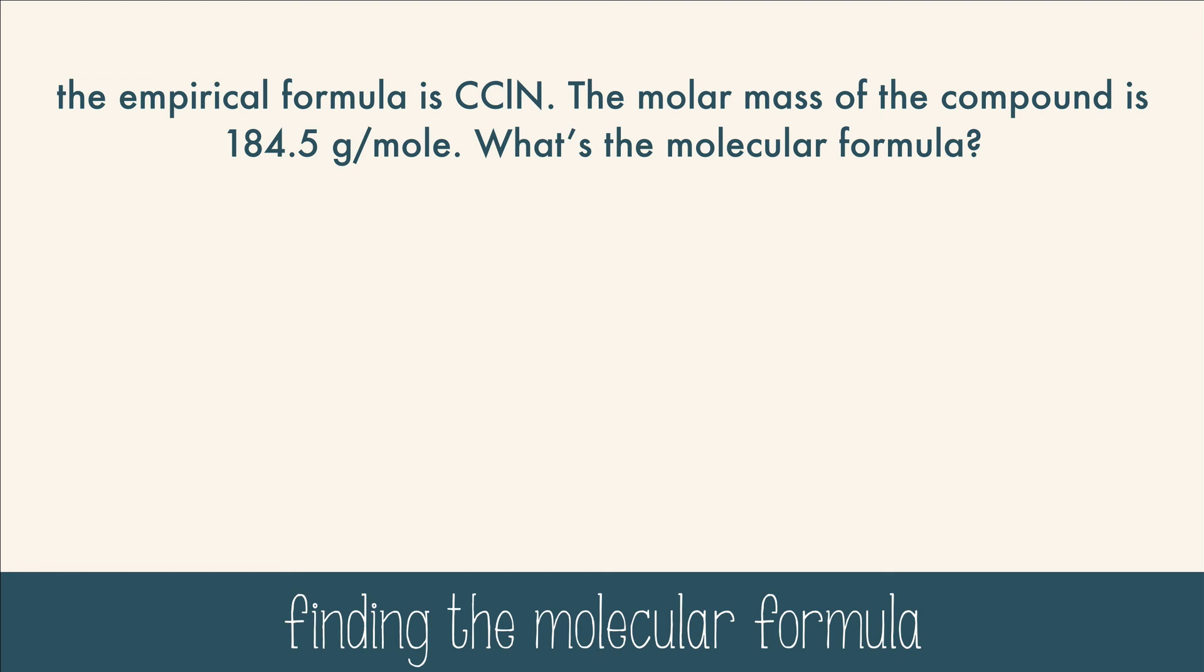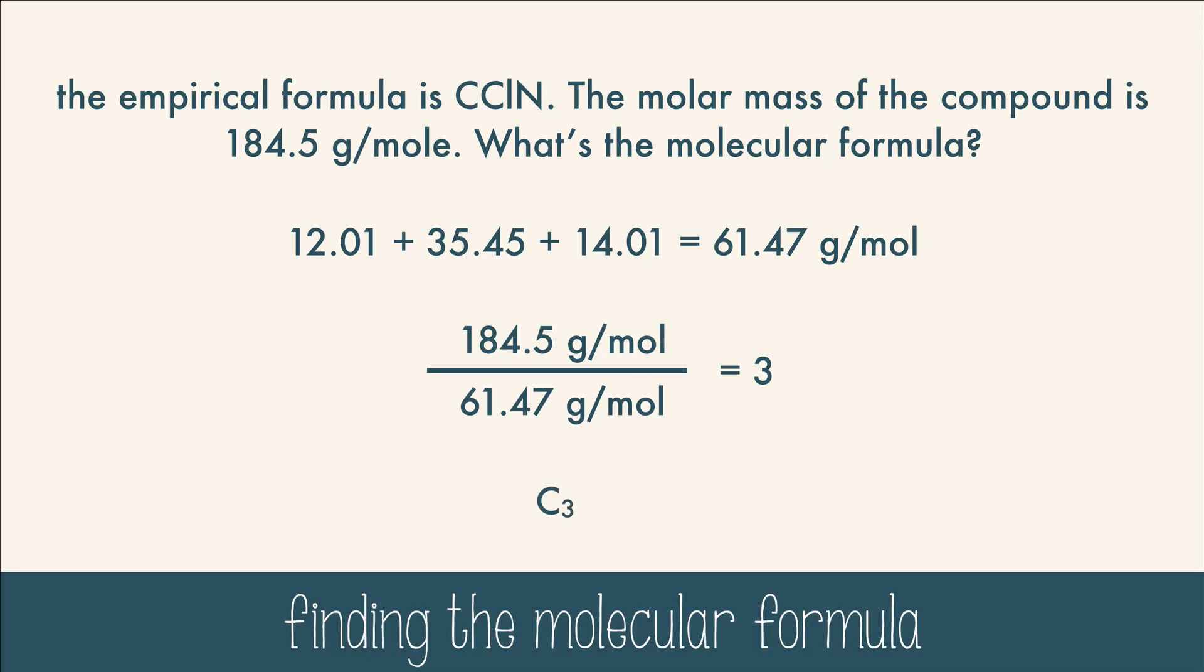First, we calculate the molar mass of CCLN. Then we take the molar mass of the compound and divide by the empirical mass. And the answer is 3, which means we have to triple the whole formula, which will give us C3Cl3N3.